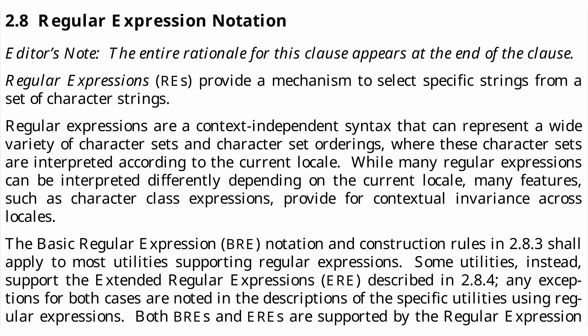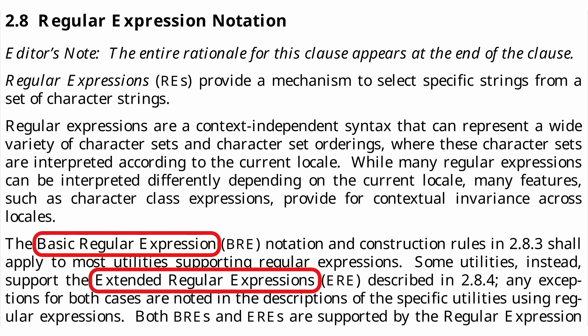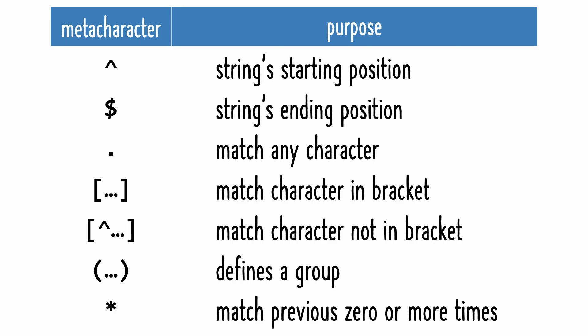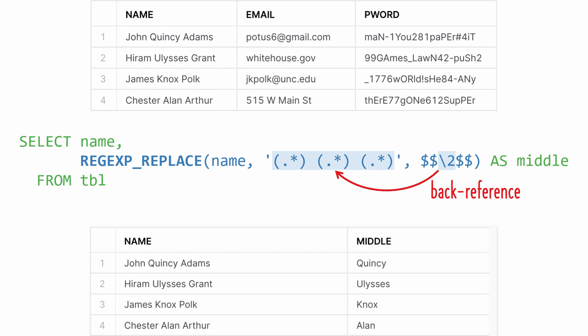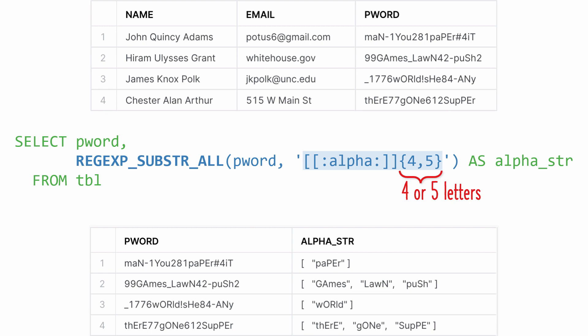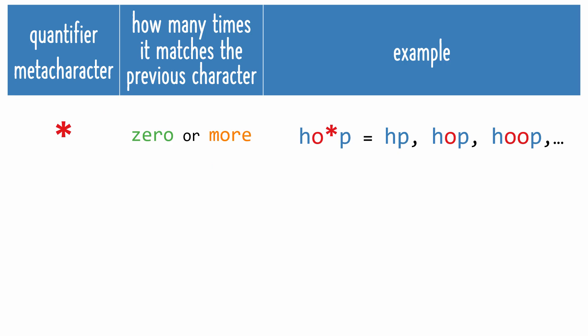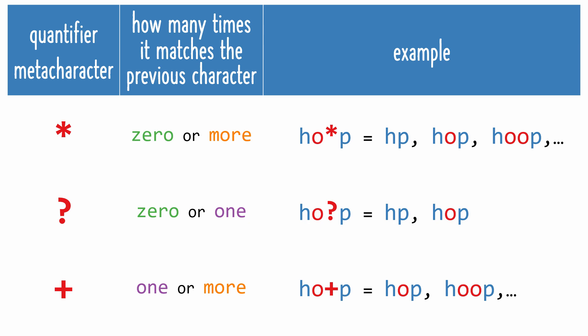The POSIX family of standards for maintaining compatibility between operating systems specifies both basic and extended syntaxes for regular expressions, and Snowflake supports both. The basic meta characters include all those originally defined by Ken Thompson 55 years ago, except for the vertical bar, which is in the extended standard. Basic also includes a back reference syntax to enable accessing a certain group, and the curly brackets quantifier to match the preceding element a certain number of times. The basic standard includes the asterisk, and the extended syntax adds two more unary operators. Both the asterisk and question mark make the preceding character optional since their ranges begin at zero, whereas the plus sign indicates the preceding character is required at least once.